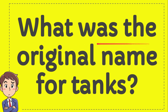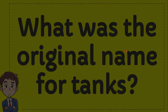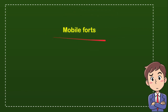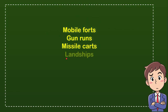What was the original name for tanks? I'll give you four options — try to guess which one you think is correct. The first option is mobile forts, the second option is gun runs, the third option is missile cards, and the last option is land ships.